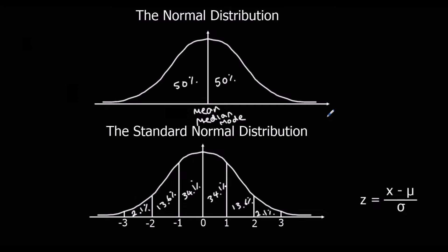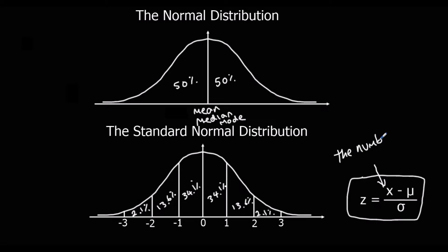In order to use the tables to answer questions, we need to standardize the normal distribution. We've only got one table, and we might be looking at data to do with heights or lengths of time, so we need to convert all of the data into a standardized score. The formula to standardize a score is z equals x minus the mean, divided by the standard deviation — a measure of how many standard deviations the number is away from the mean.